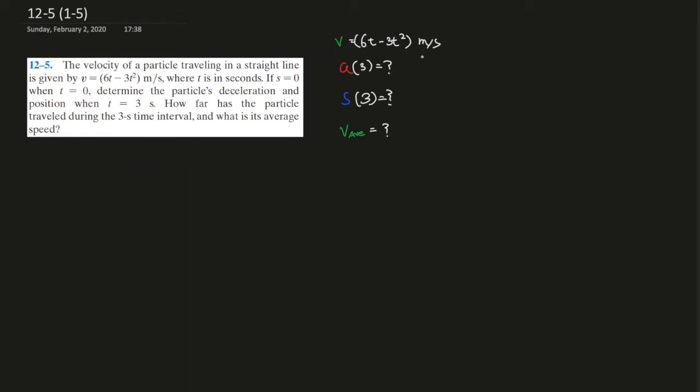It's given, right, the velocity function, and we're looking for acceleration, distance at three seconds, and the average speed. So it's an integral and a derivative problem to find these two, right? Because you know, taking the derivative in terms of time, acceleration gives you velocity.